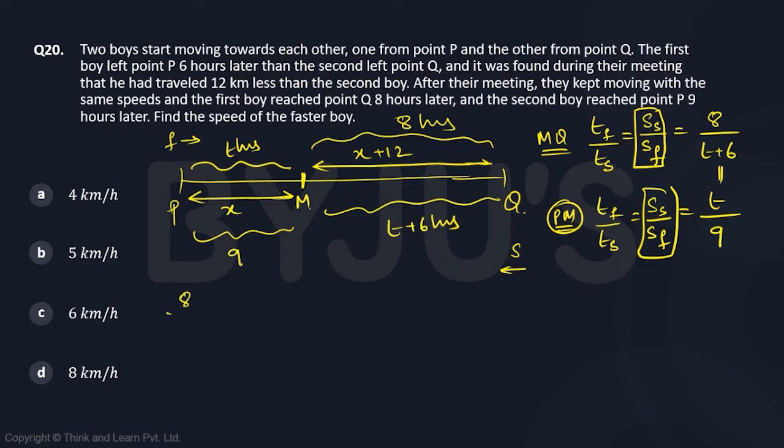So you will get 8 by T plus 6 equal to T by 9, or this gives you 72 is equal to T squared plus 6T, or you will get from here T squared plus 6T minus 72 equal to 0.